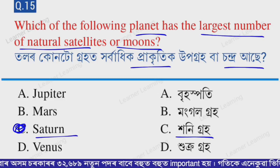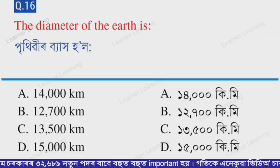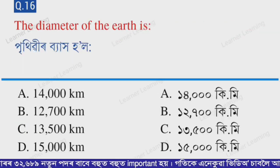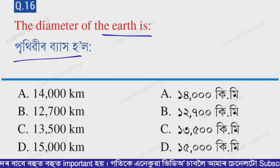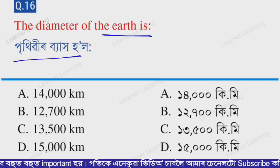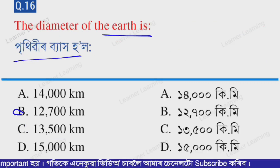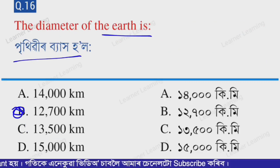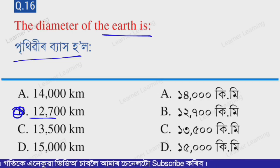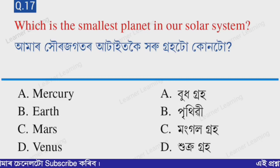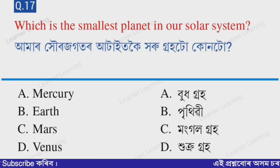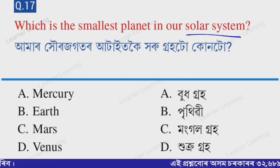Next question: What is the diameter of the Earth? Select from the options. Option B — 12,700 km. The diameter of the Earth is approximately 12,700 km. Next question: Which is the smallest planet in our solar system?